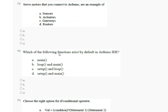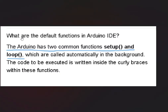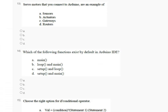Question number 14: which of the following functions exist by default in Arduino IDE — first main, second loop and main, third setup and loop, fourth setup and main? Arduino has two common default functions: setup and loop. So the correct answer for question number 14 is option number C — setup and loop.